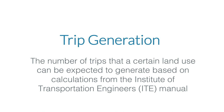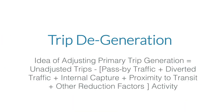A first key term to understand, particularly when dialoguing with transportation engineers, is trip generation — the number of trips that a certain land use generates. It's based on expected use from numerous cases throughout the United States, documented in the ITE manual, or Institute of Transportation Engineers manual. Following on from that is trip degeneration: reducing the number of trips estimated from those land uses by subtracting things like pass-by traffic, diverted traffic, and trips captured in a mixed-use development. There are many ways to do this and most are estimates, but the concept is important.